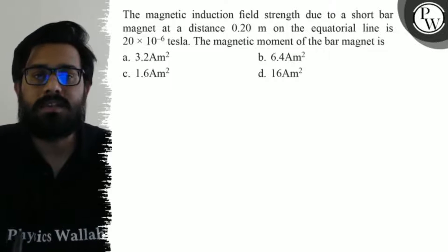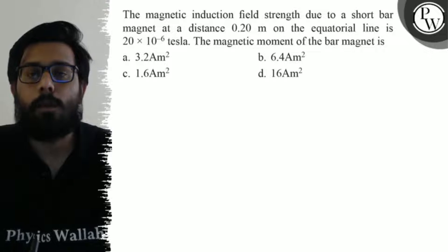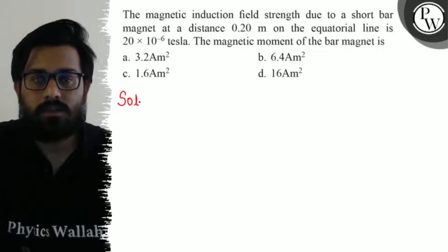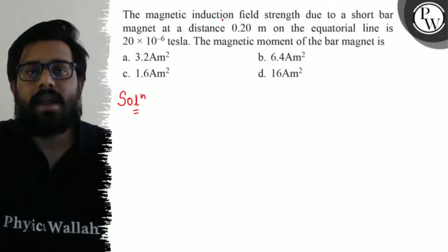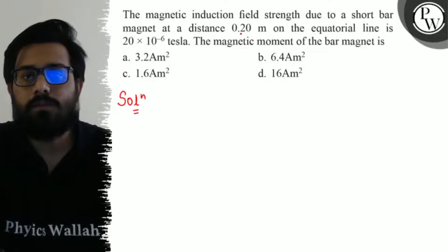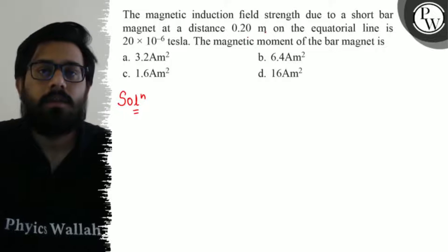Third option says 1.6 ampere-meter squared, and the fourth option says 16 ampere-meter squared. So here in this question, the magnetic induction field strength due to a short bar magnet at a distance of 0.20 meter on the equatorial line...